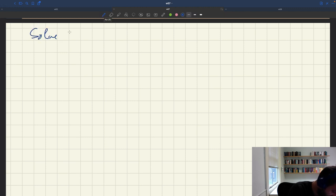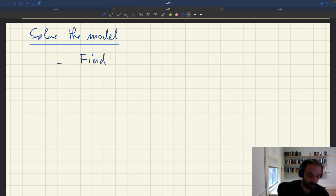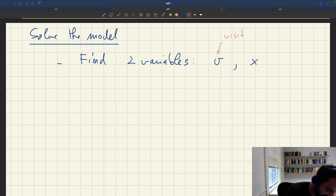We're going to solve the model. So what does that entail? We have to find two key variables: aggregate number of visits V and tightness X. To do that we'll have two key relationships.